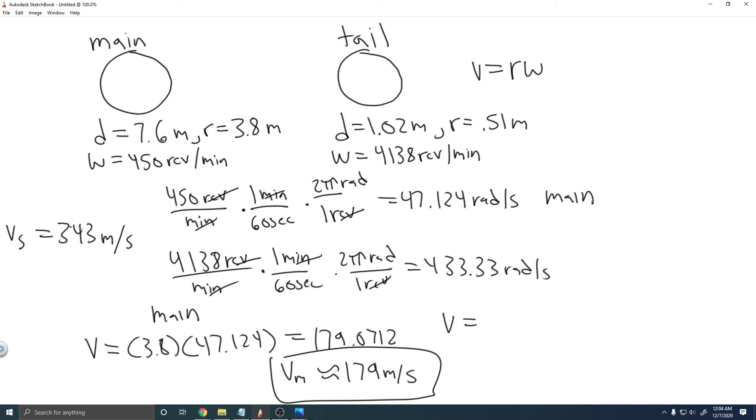Now let's do the other one. So V equals this radius, 0.51, multiplied by its speed, 433.33. So go ahead and do that, 0.51 times 433.33. You'll get 220.9983. So we'll just say Vt is equal to about 221 meters per second.